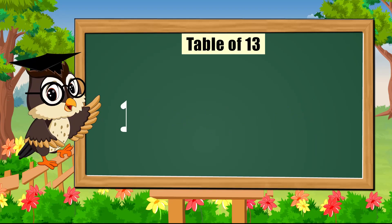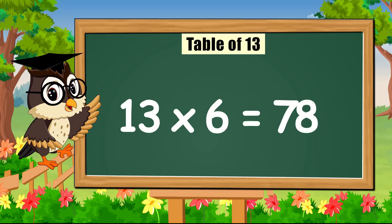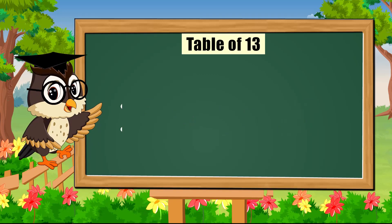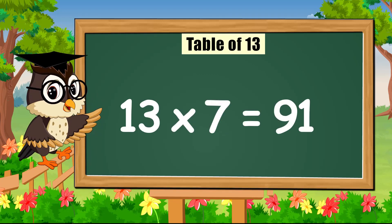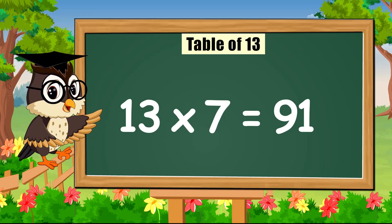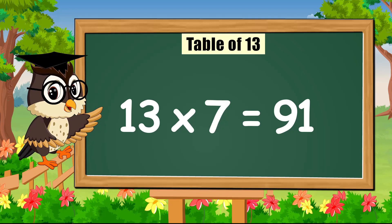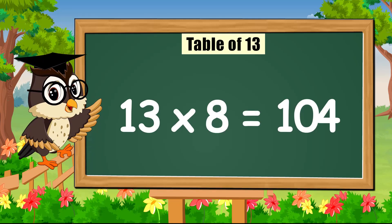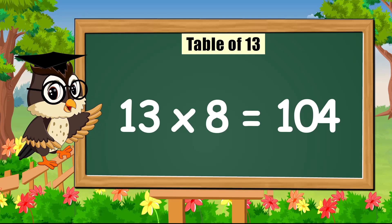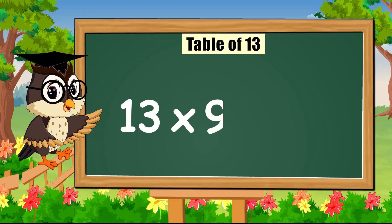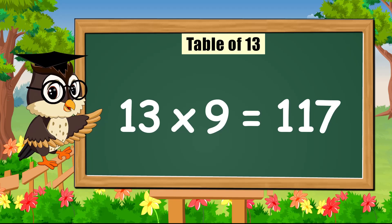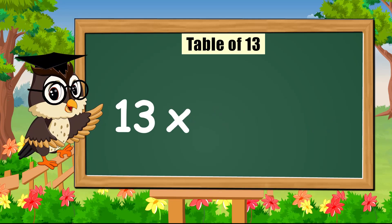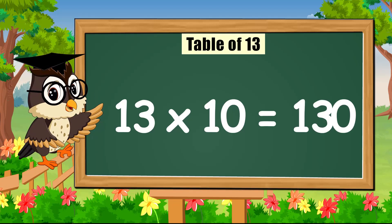Thirteen times six is seventy-eight. Thirteen times seven is ninety-one. Thirteen times eight is one hundred and four. Thirteen times nine is one hundred and seventeen. Thirteen times ten is one hundred and thirty.